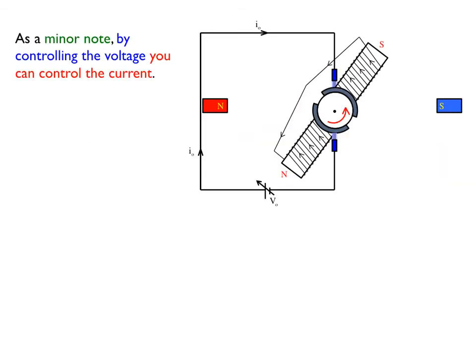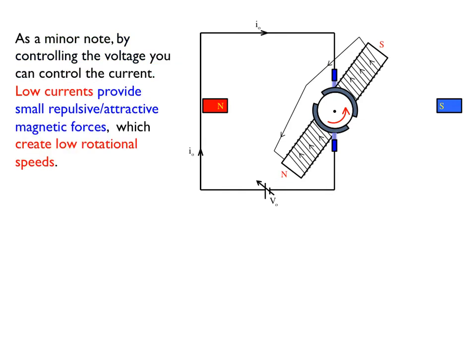As a minor but interesting note, by controlling the voltage, you can control the current in the system. With lower current through the coils, you will get a smaller magnetic field at the ends of the coil. This will produce smaller attractive and repulsive forces with the fixed magnets, which in turn will generate lower rotational speeds. Higher currents will generate larger magnetic fields, which will produce larger forces of attraction and repulsion, which will generate larger spin speeds.